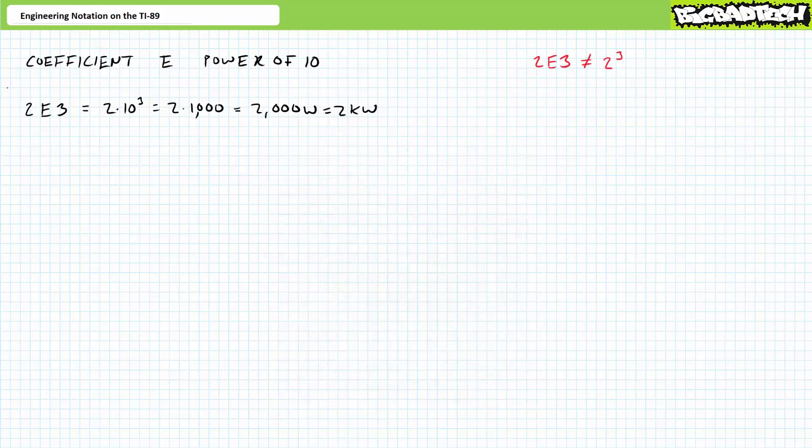Here are three totally wrong interpretations of engineering format. First, 2E3 does not mean 2 raised to the third power. 2E3 means 2 times 10 to the third, or 2 times 1,000, or 2,000 watts, or using engineering prefixes, 2 kilowatts.